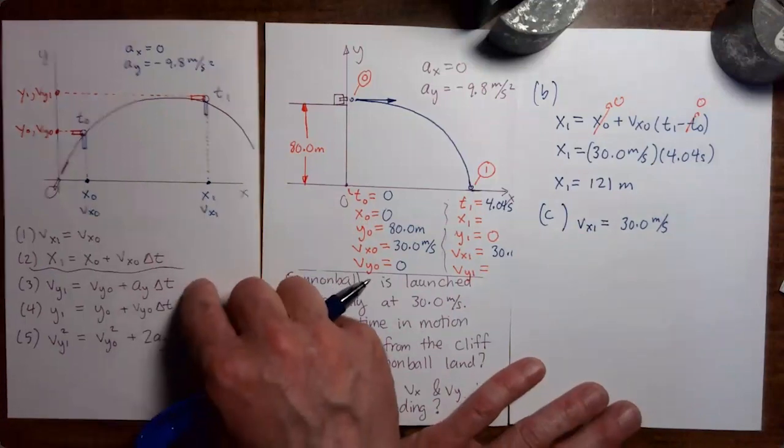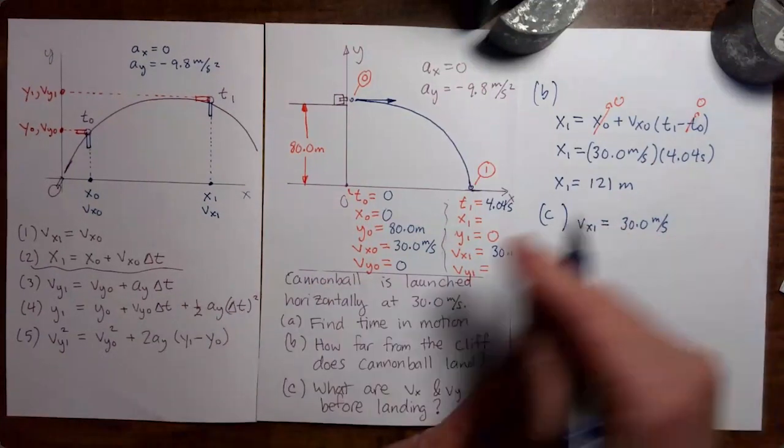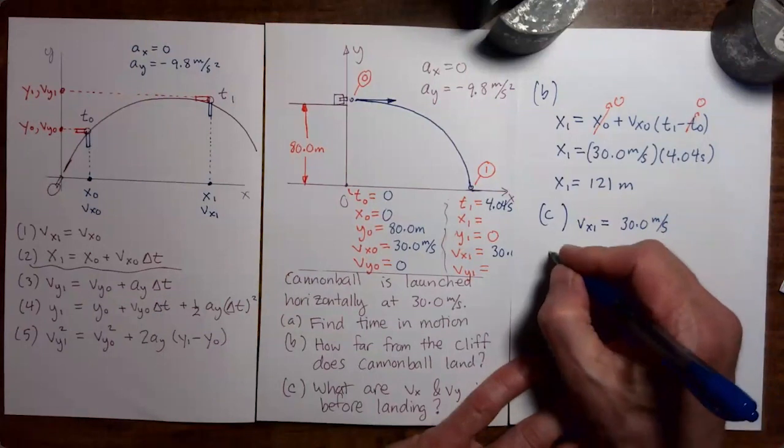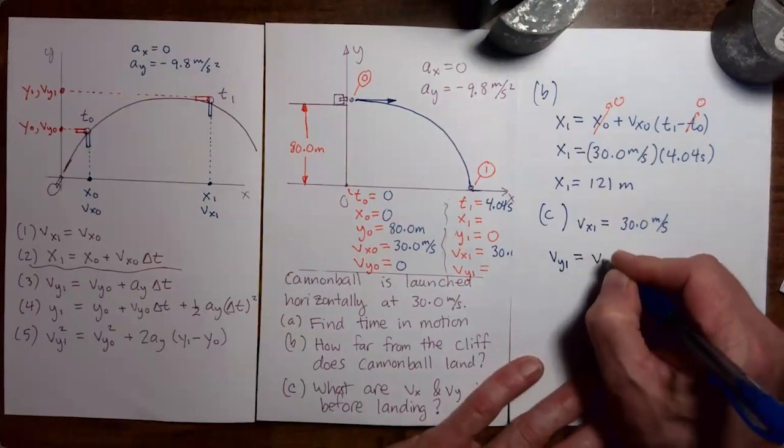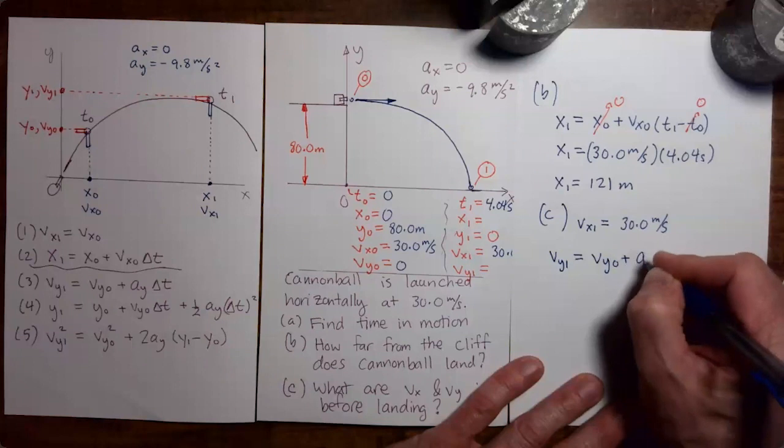The easiest way to do this, I think, is to use equation three. So let me take equation three, copy it over here. We then have vy1 equals vy0 plus ay delta t.